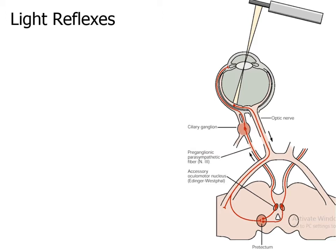When a torch is flashed onto an eye, the information from the retina is taken through the optic nerve of that eye, through the optic tract, to the pre-tectal nucleus of the same side. That pre-tectal nucleus is connected bilaterally to Edinger-Westphal nuclei. The Edinger-Westphal nucleus of the same side sends parasympathetic fibers through the oculomotor nerve of the same side, through the ciliary ganglion, to the sphincter pupillary muscle and constricts the pupil. That is called the direct light reflex.